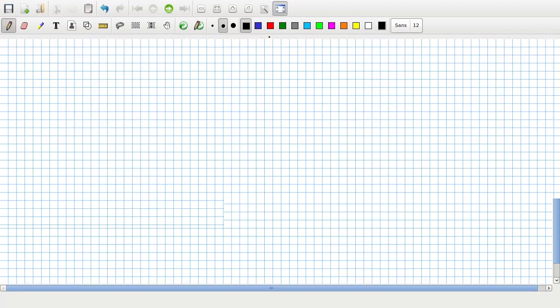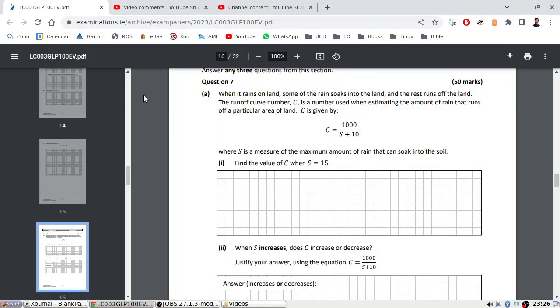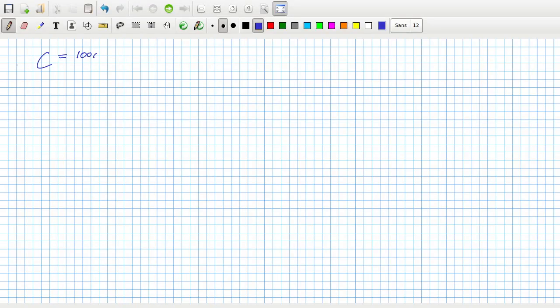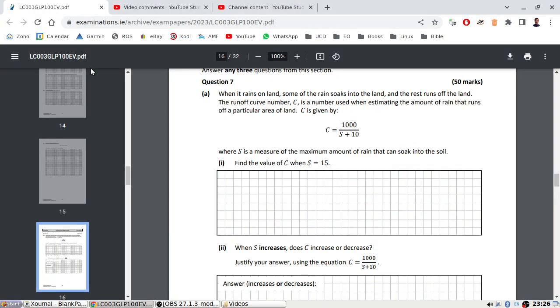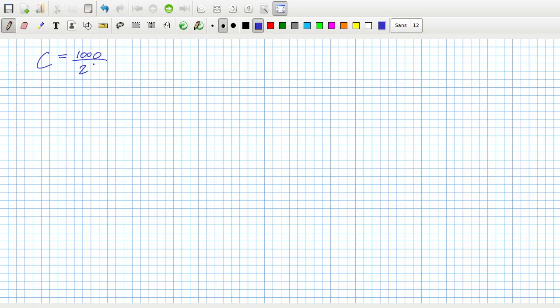So S is 15, so C equals 1000 over S is 15, so 15 plus 10 is 25. So it's just 1000 divided by 25, which is 40.